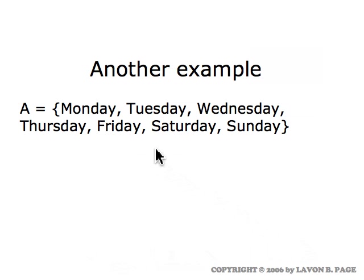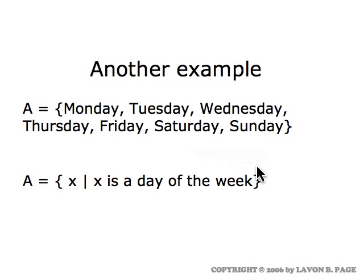In this example, the set A is the days of the week — the seven elements Monday, Tuesday, Wednesday, Thursday, Friday, Saturday, and Sunday. We could also describe the set A by saying that A consists of all things X which satisfy the condition that X is one of the days of the week.